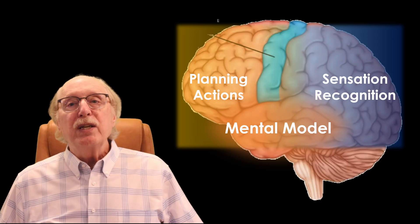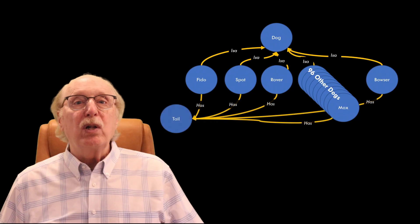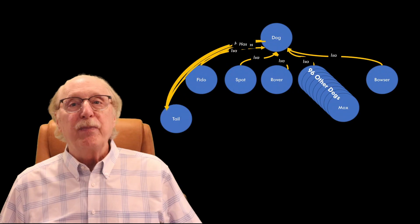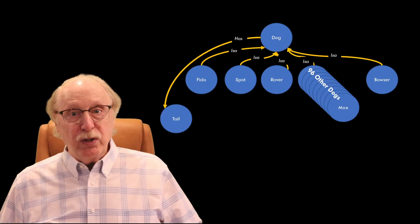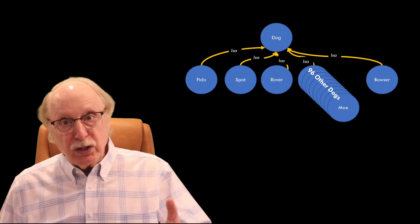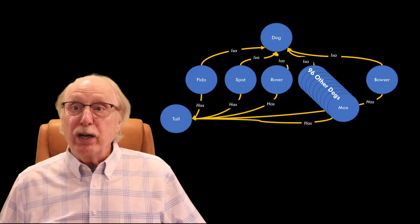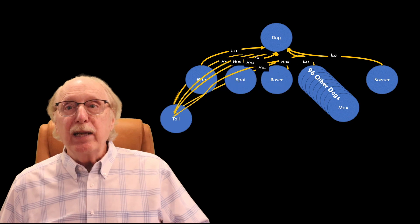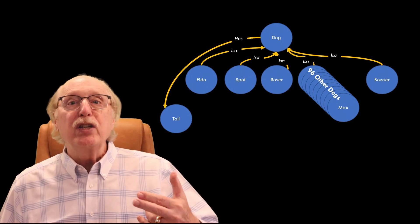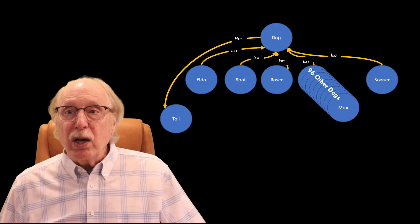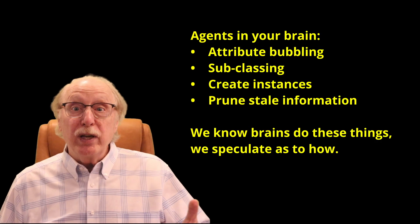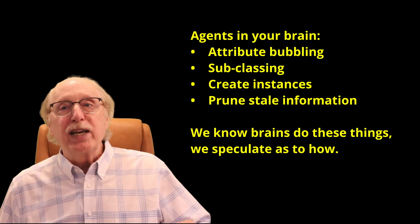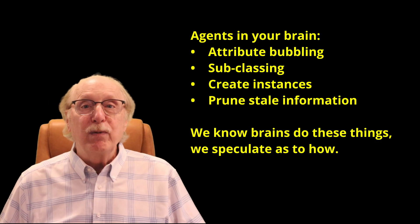Beyond this, our brains include what I call agents — specialized processes that refine and organize knowledge. An agent might notice that Fido, Rover, and Spot all share a common attribute, like has a tail, and automatically bubble that attribute up to the general concept of dog. So the moment you learn that Rex is a dog, attribute inheritance lets you know Rex has a tail without needing further information.